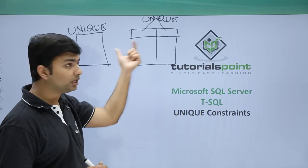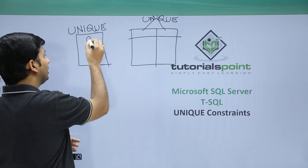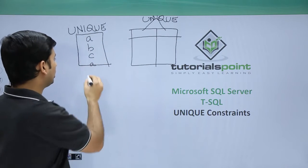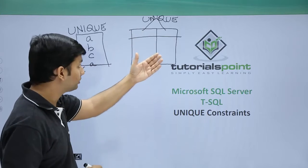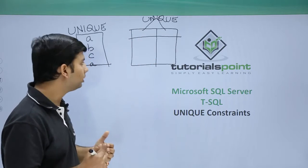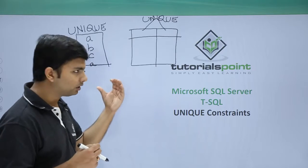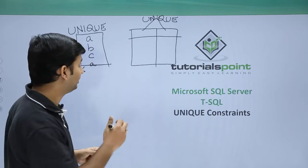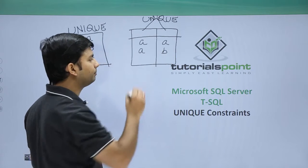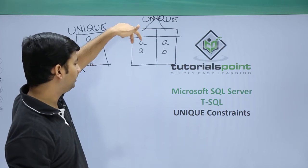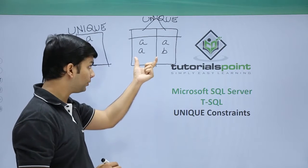If you apply a different unique constraint on each column individually, each column's uniqueness is checked separately. For example, if you enter 'a' and then 'a' again, it won't be allowed since 'a' is already in that column. But with a shared constraint across multiple columns, the combination is what must be unique — so 'a, a' followed by 'a, b' is allowed because the combination is still unique.